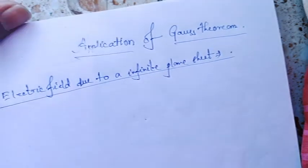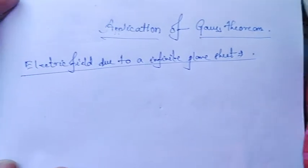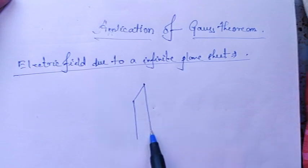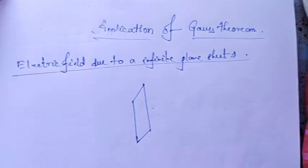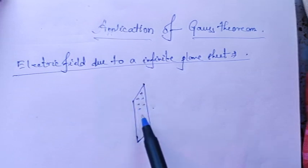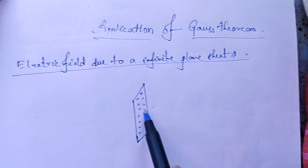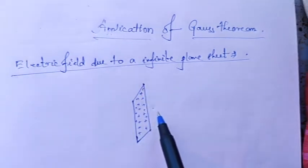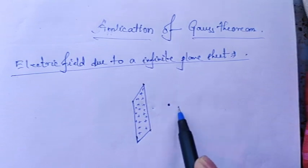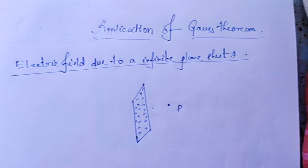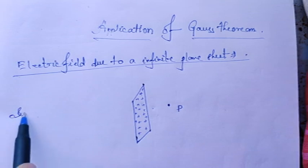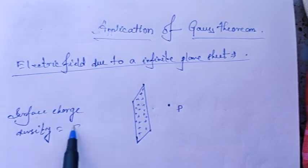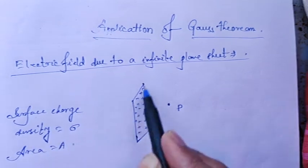Electric field due to an infinite plane sheet. Let's draw it. Assume this is a plane sheet that is uniformly charged, and I am assuming this charge is positively charged. We want to find out the electric field at a point P. Before we start, surface charge density sigma — each area is A.